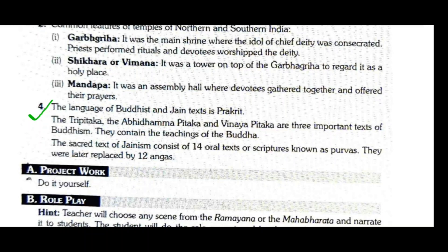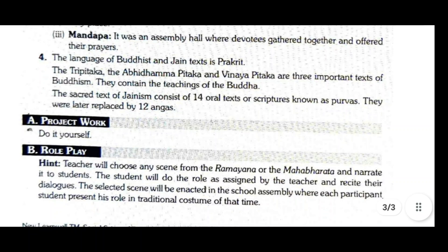Question four: What was the language of Buddhist and Jain texts? Write about some of these texts. The language of Buddhist and Jain texts was Prakrit. The Tripitaka — comprising the Abhidhamma Pitaka and Vinaya Pitaka — are three important texts of Buddhism containing the teachings of Buddha. The sacred texts of Jainism consist of 14 oral texts of scriptures known as Purvas, which were later replaced by 12 Angas.